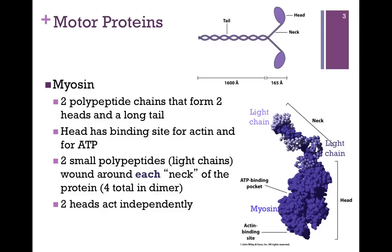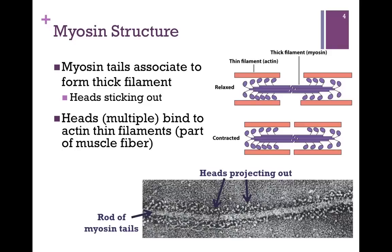These two heads, although associated as a dimer, work independently of one another, and that's important for myosin's role. The role of myosin is to contract muscle. As you can see in the figure, it assembles to form a more complex structure called the thick filament. Multiple tails associate together, forming a bundle of myosin dimers, with the heads projecting out. Those heads are in contact with the actin, which is called the thin filament, on either side of the tail fibers.